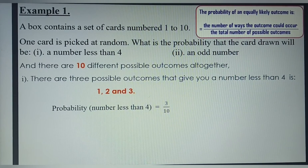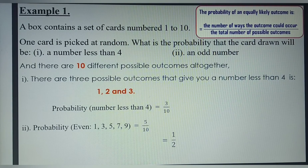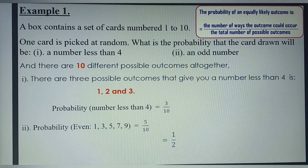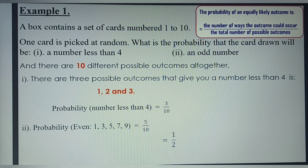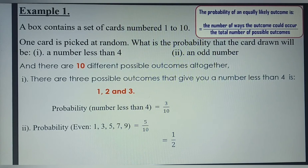What is the probability that a card drawn will be an odd number? From 1 to 10, the odd numbers are 1, 3, 5, 7, and 9 — a total of 5. So the number of ways you could get an odd number is 5, and the total number of possible outcomes is 10. So 5 divided by 10, when you simplify, gives you 1 over 2.